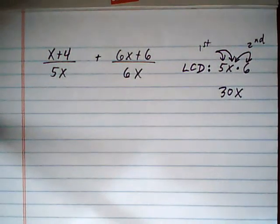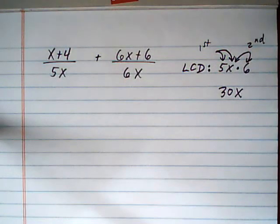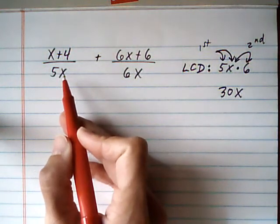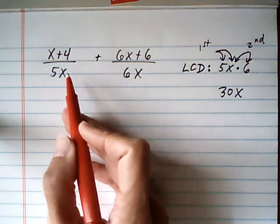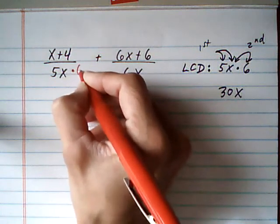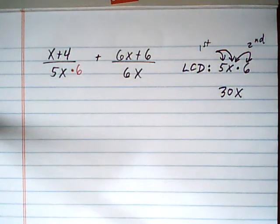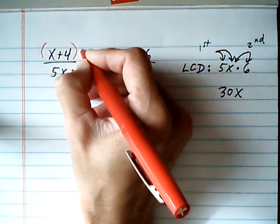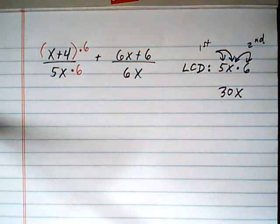Alright, once you get your LCD, the next step is to force the fractions to have the LCD as their denominator. 5x needs a factor of 6 multiplied to it to make 30x, so times 6. And that's okay to do as long as you balance out the fraction—multiply the entire numerator by the exact same number, 6.